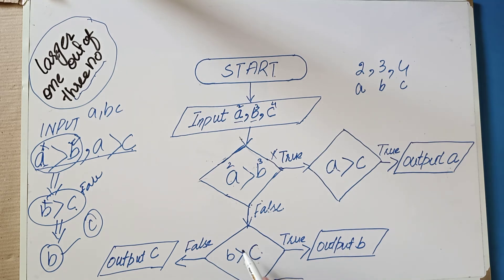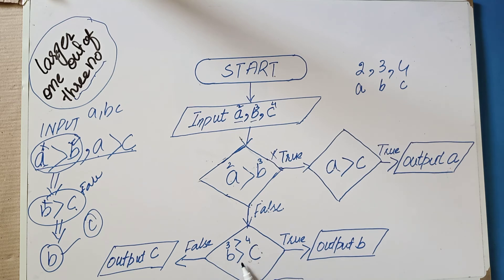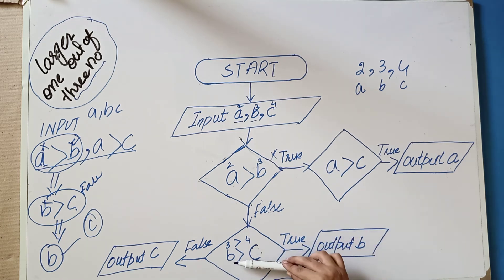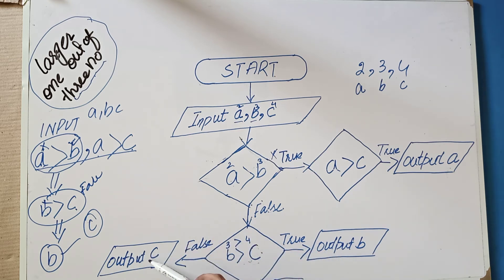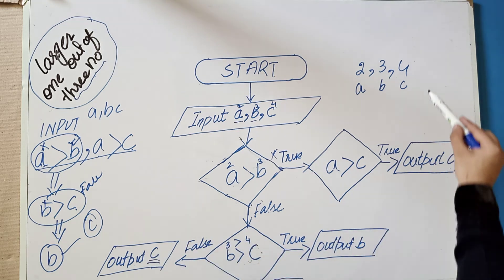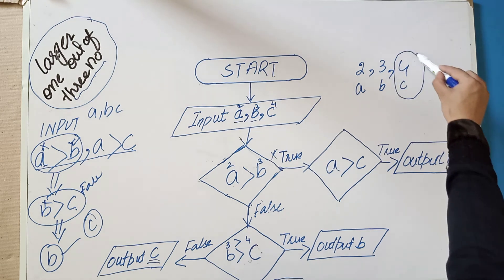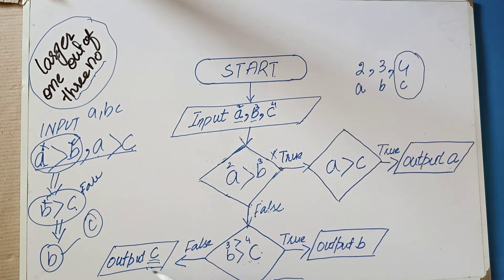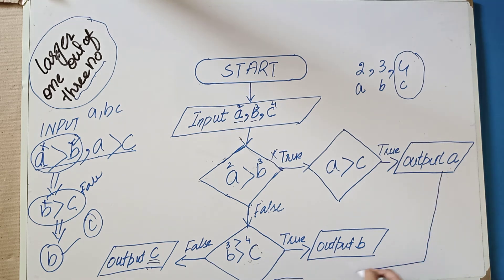We check: is B greater than C? Is 3 greater than 4? False. So we continue to the false path. The program terminates here and the largest number printed is C. C is printed. The answer is C, and then the program stops.